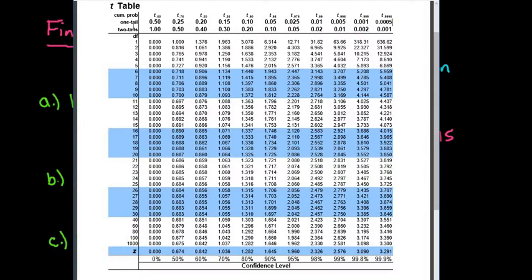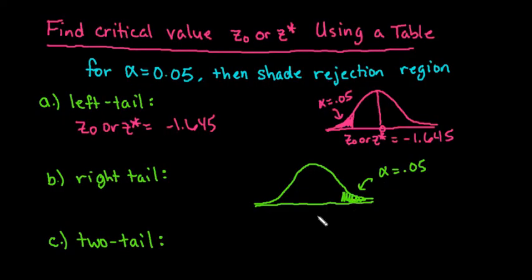Just to recap, you would go to a one-tail, a right-tail is a one-tail, we would find 0.05, we'd go to the very bottom, it hasn't changed, it's still 1.645.